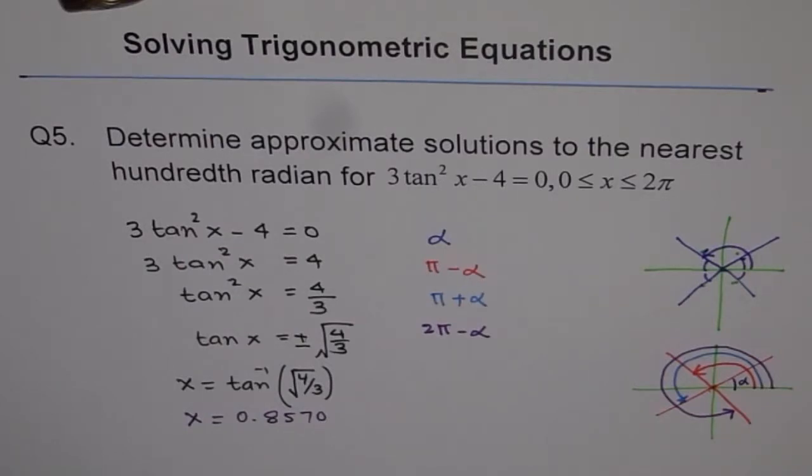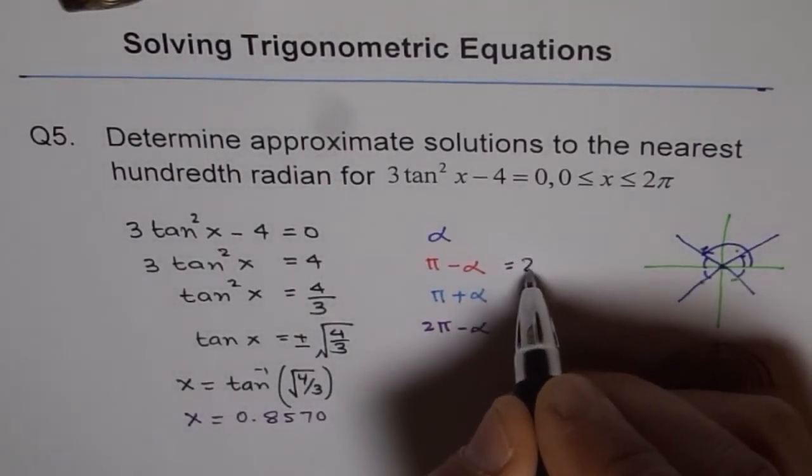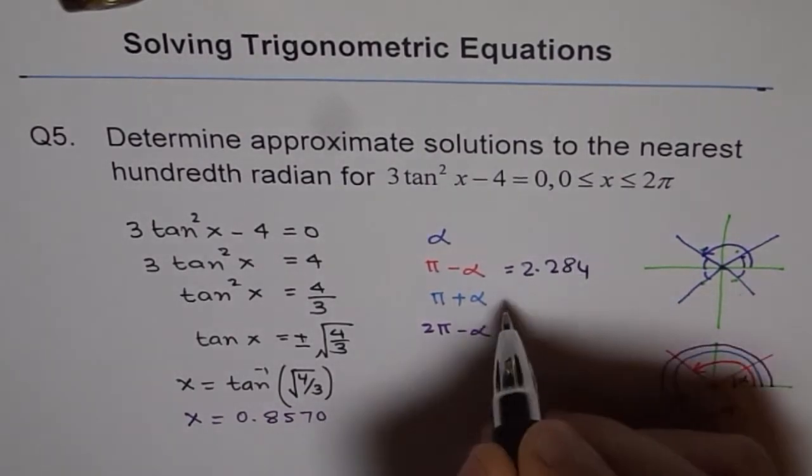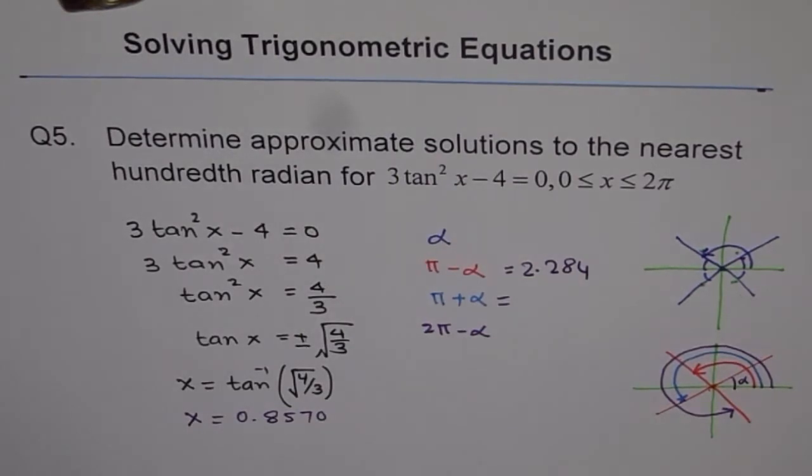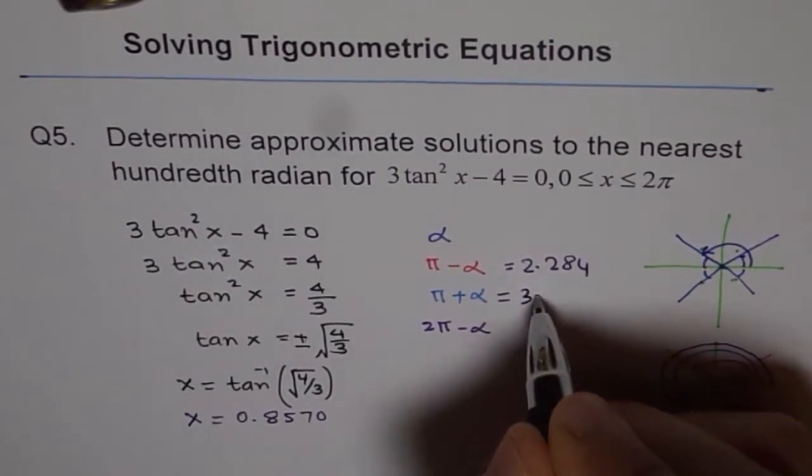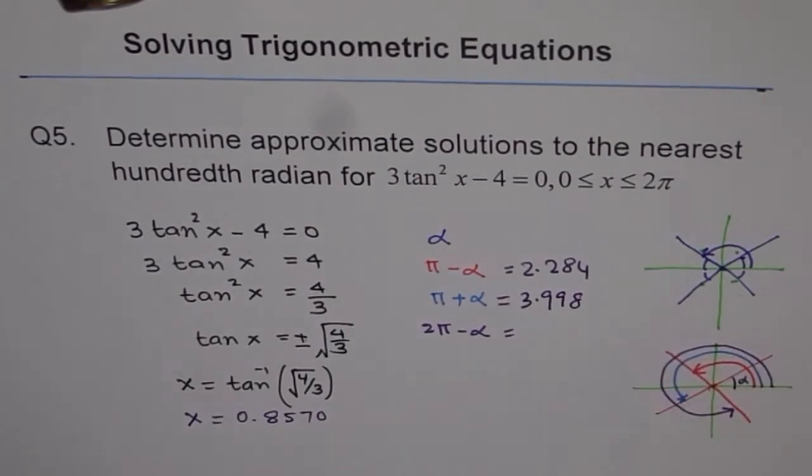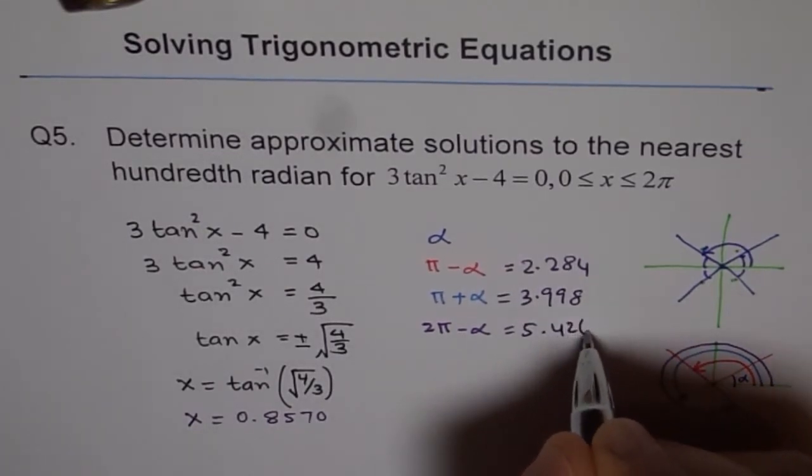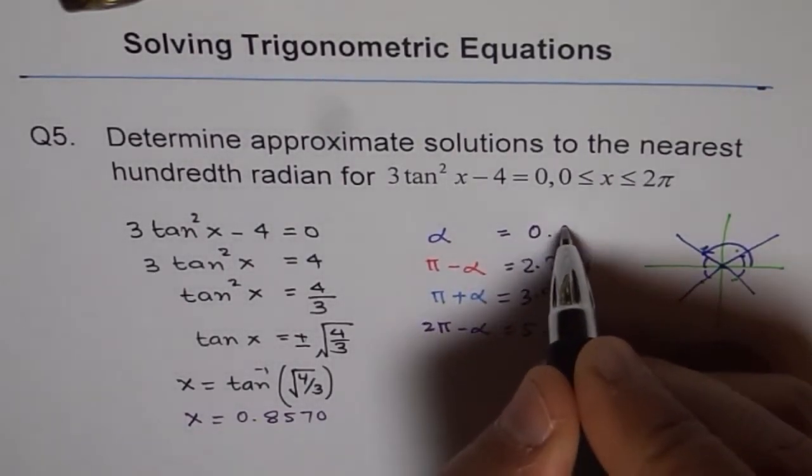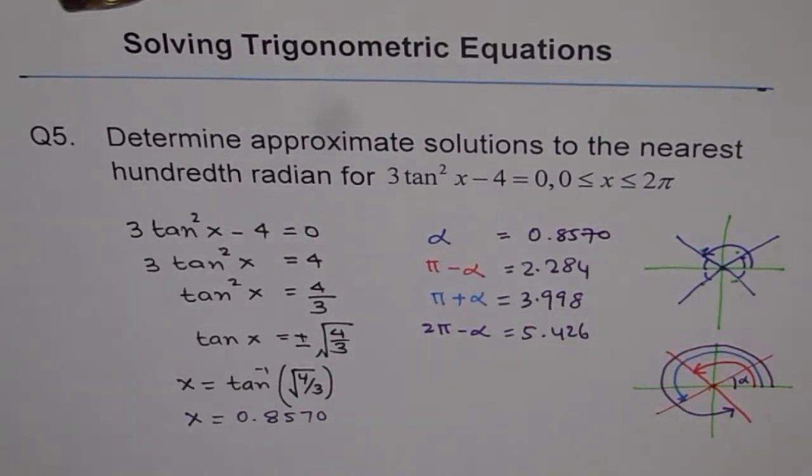The other solutions are π minus alpha, π plus alpha and 2π minus alpha. Let's find π minus alpha: π minus 0.8570, which is 2.284, we will round it to hundredth soon. Then we have π plus alpha: π plus 0.857, which is 3.998. And then we have 2π minus alpha: 2 times π minus 0.857 equals 5.426. And we know what alpha is: 0.8570. So these are the four answers we get.